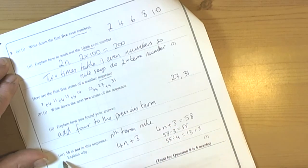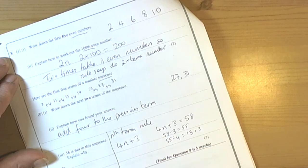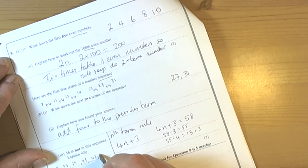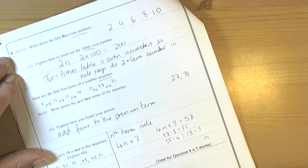58 is not in the sequence. The alternative way of doing it would be to just carry on the sequence and show that it's going to go 31, 35, 39, 43, 47, 51, 55, 59. So it's going to go up in 4s and we can see that 58 is missed.